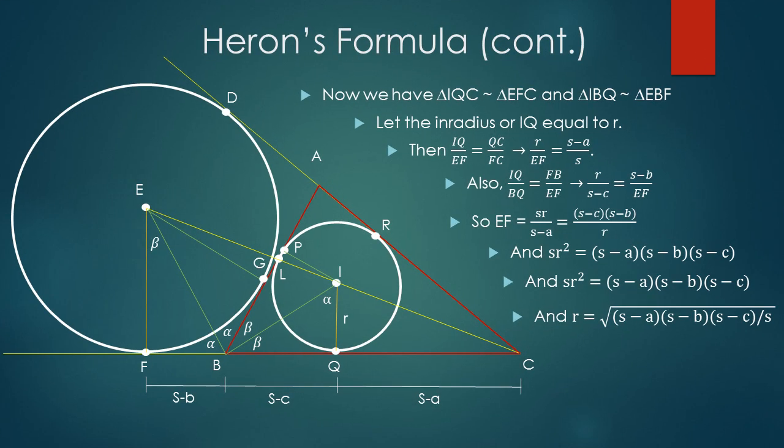Summarizing the last two slides, we have triangle IQC is similar to EFC and triangle IBQ is similar to triangle EBF. Also, let the inradius or IQ equal r. Then IQ over EF equals QC over FC, which then implies r over EF equals s minus a over s. Also, IQ over BQ equals FB over EF, which then implies r over s minus c equals s minus b over EF. So if we solve for EF, EF equals sr over s minus a equals s minus c times s minus b over r.